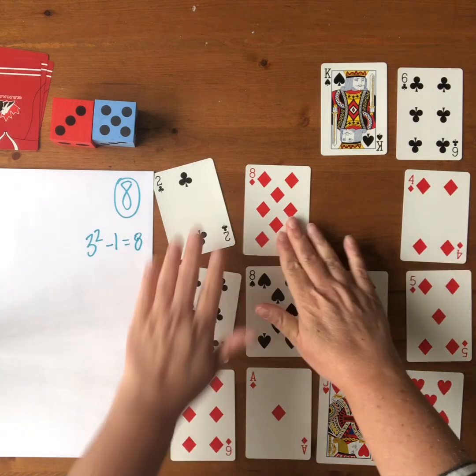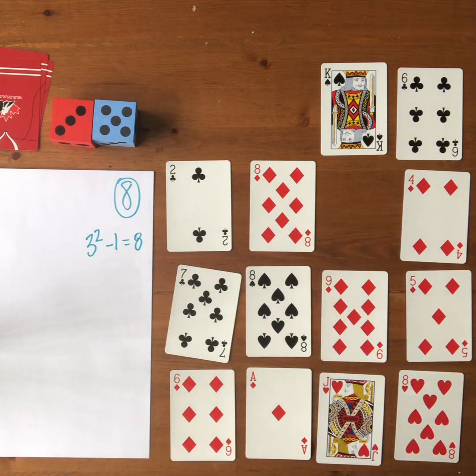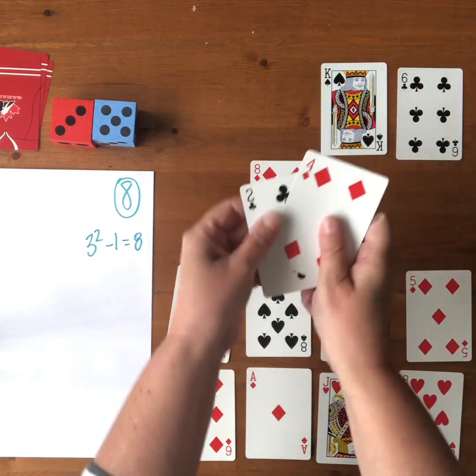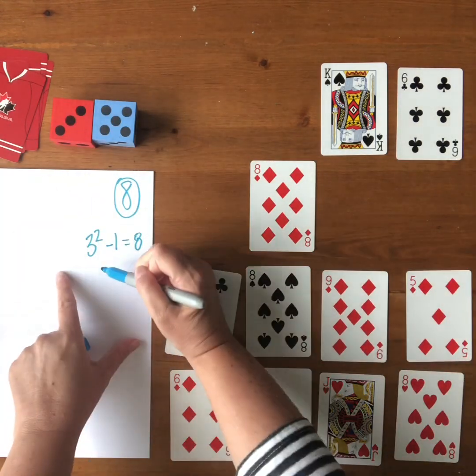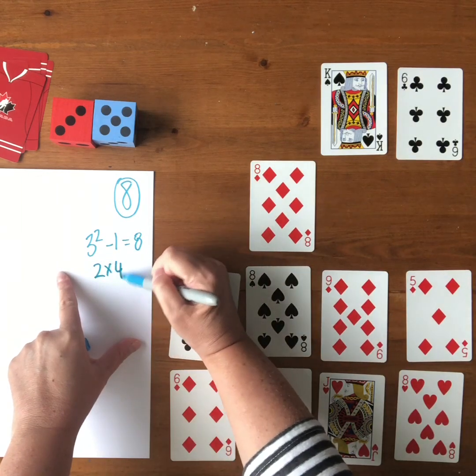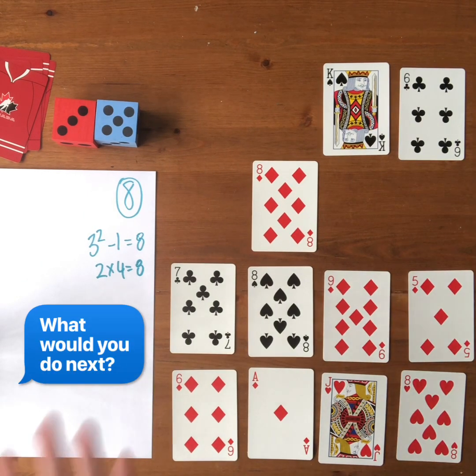And then I look at the cards that I have left and think about other ways that I can make eight. So I could do two times four. What would you do next? What different ways can you use these cards to make eight?